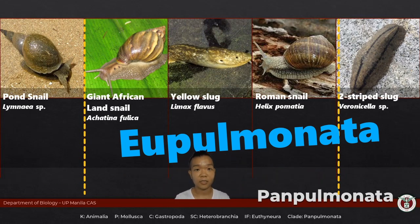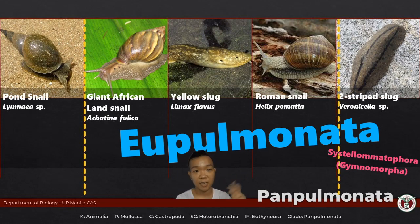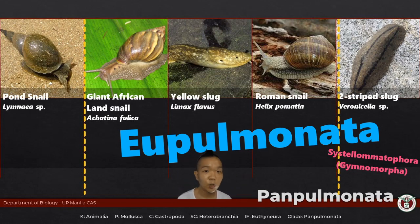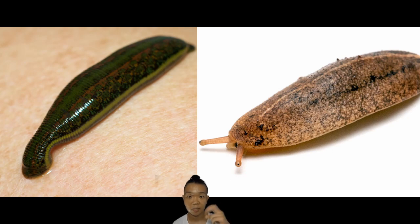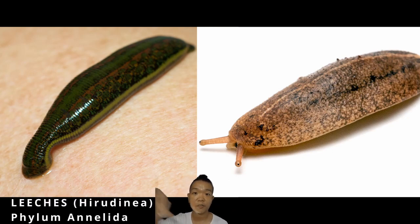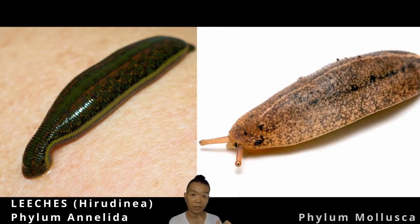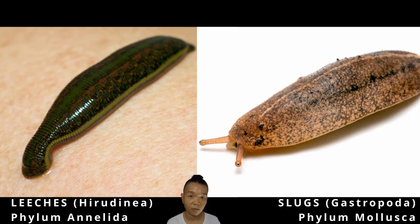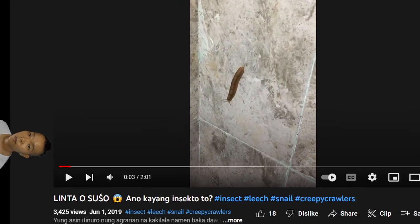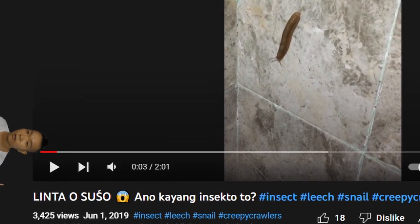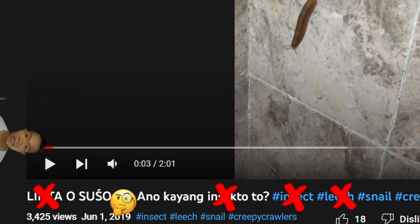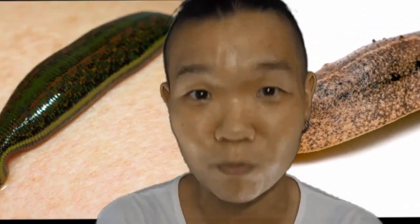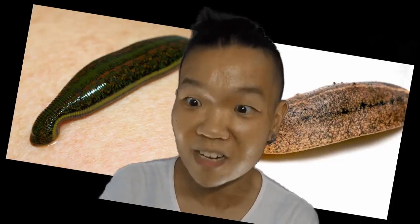The last group is under order Systellommatophora — this used to be order Gymnomorpha. 'Gymno' means naked, 'morpha' means form — so these are the true slugs with no shell. These are also what are called 'linta' locally, but they're not to be confused with blood-sucking leeches. Remember that leeches are part of segmented worms, Phylum Annelida — this one is a slug and it's part of Phylum Mollusca. That's where taxonomic classification becomes useful, because locals may call both 'linta' but they're completely different organisms.